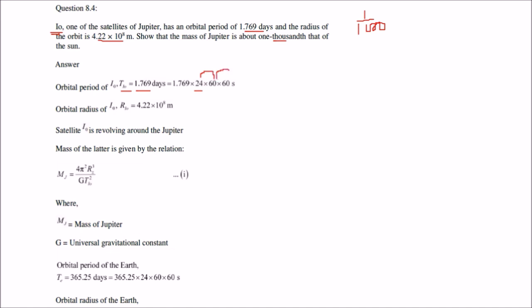Ek din mein 24 ghante hote hain, ek ghante mein 60 minute, ek minute mein 60 second — toh humne isko second mein nikaal liye. Jo orbital radius hai woh bhi diya hua hai: 4.22 into 10^8 — yeh bhi humne yahan likh liye. Yeh R ho gaya, yeh T ho gaya. Ab satellite jo yeh Jupiter ka hai woh Jupiter ke round ghoom raha hai — mass kaise nikaalenge? Mass ka hamaarey paas ek relationship hai: 4π²r³ / (GT²), aur yeh MJ — mass of Jupiter — hai.